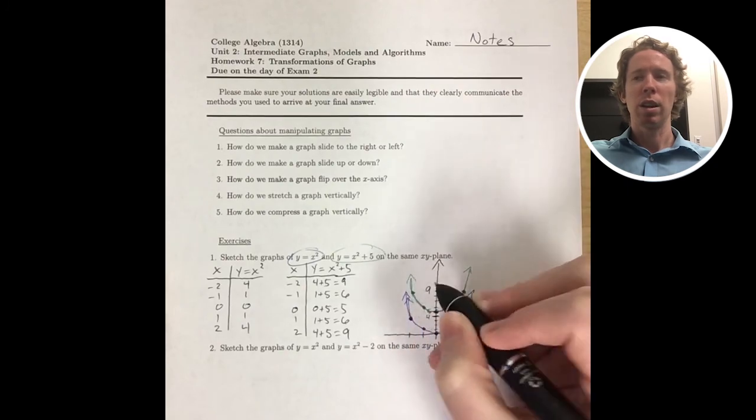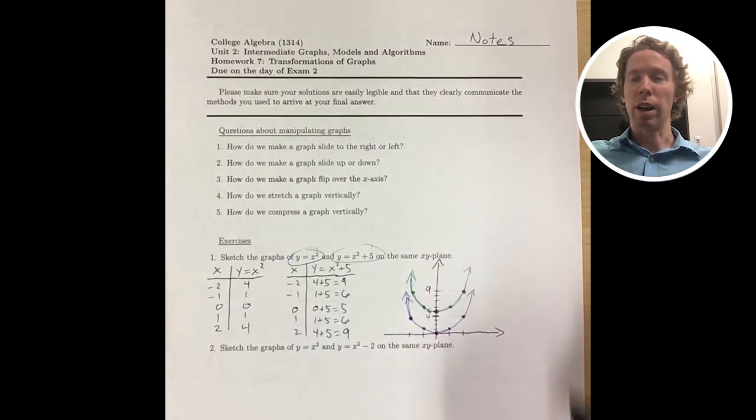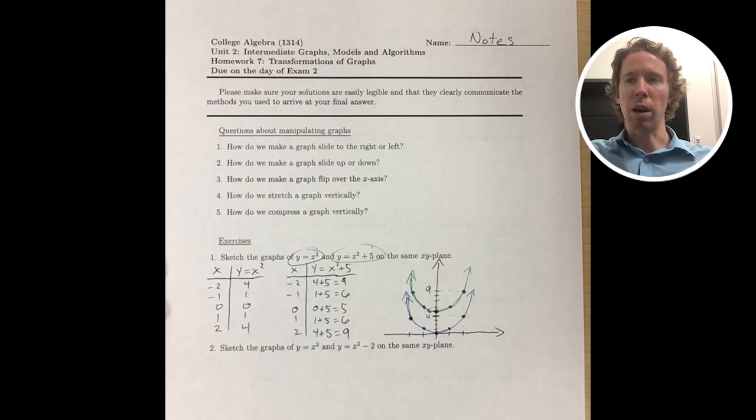Alright, so now that we have both curves, it looks like I was right. You can just push the graph up by 5 units.